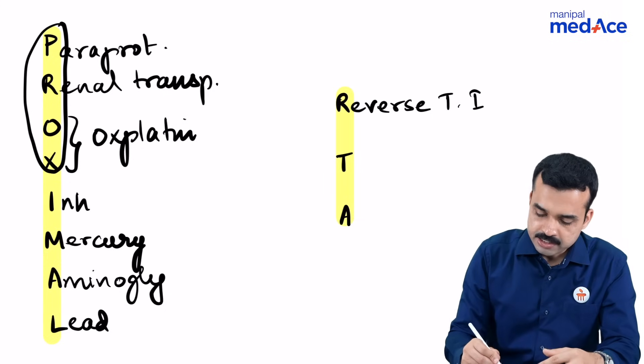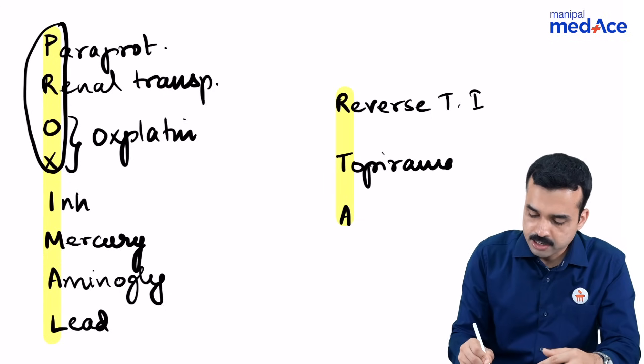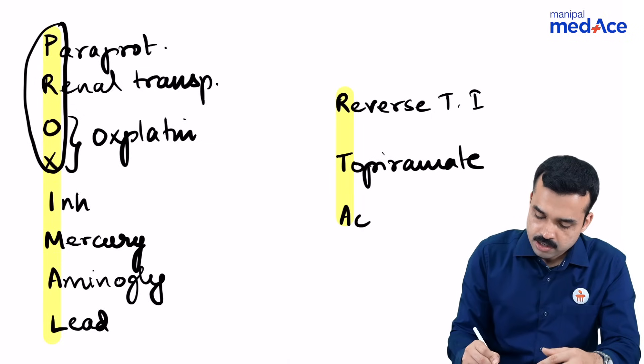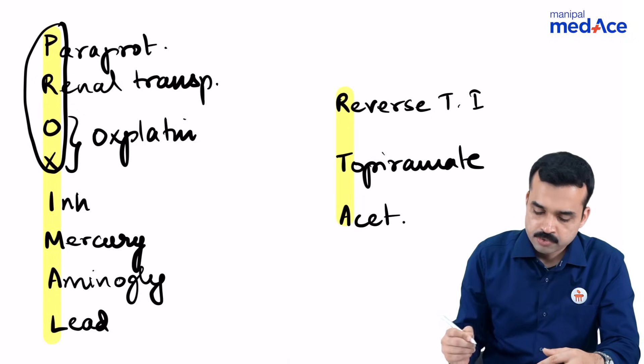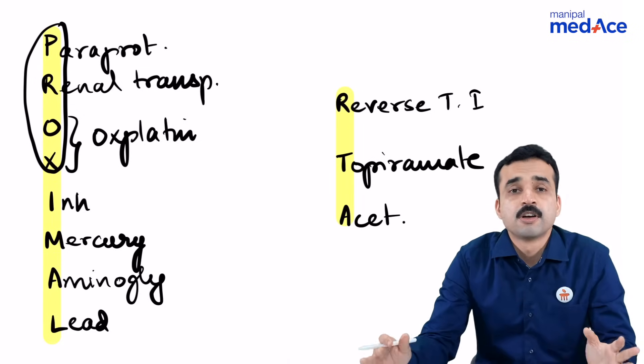T stands for topiramate, and finally A stands for acetazolamide. So these are the important causes of type 2 proximal renal tubular acidosis.